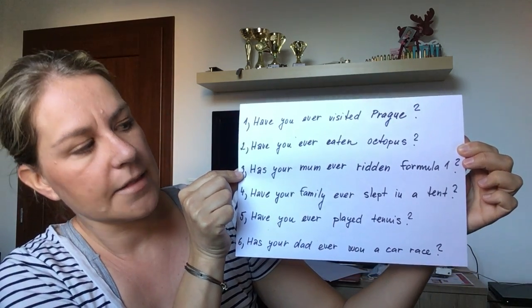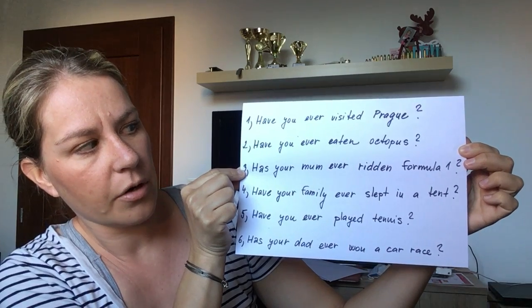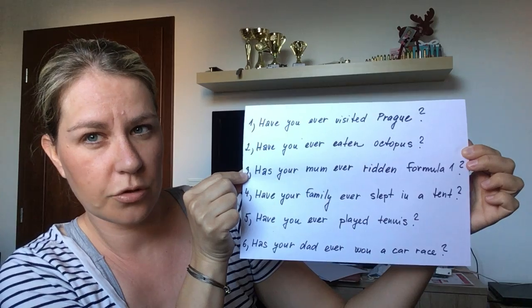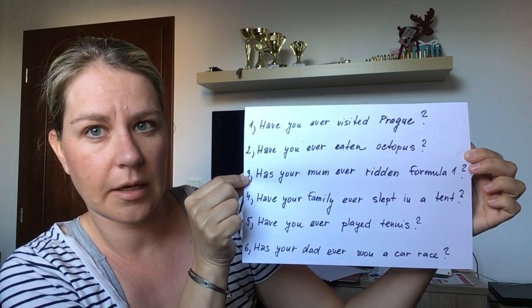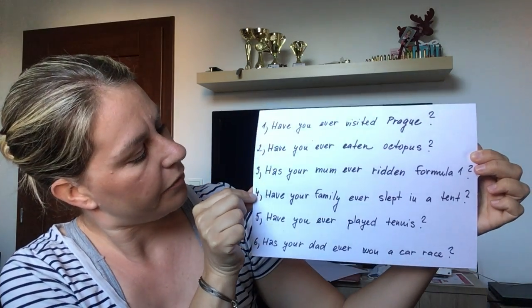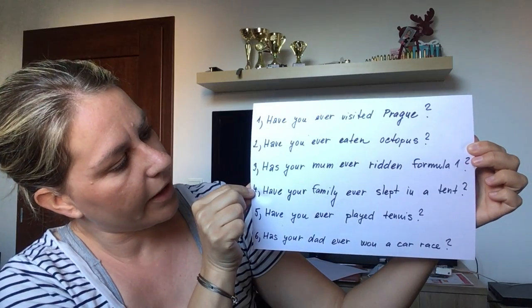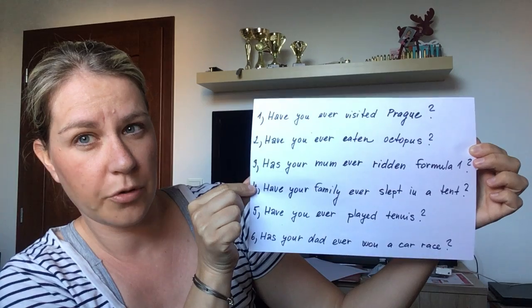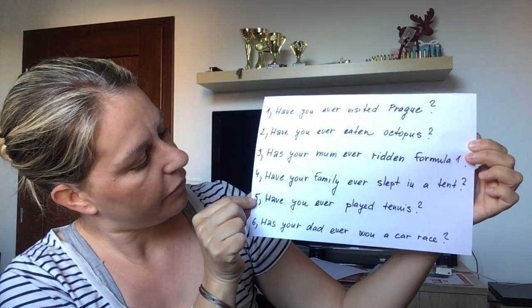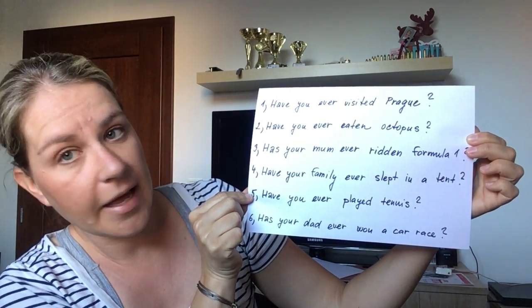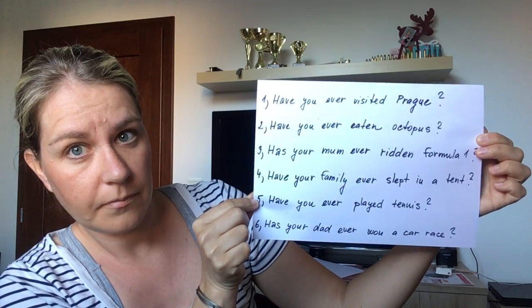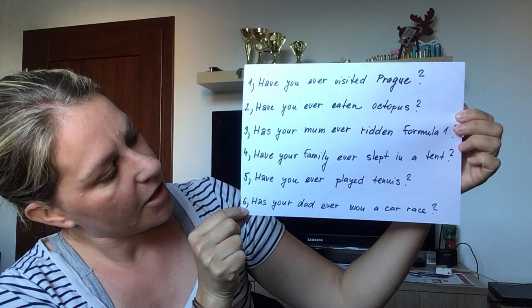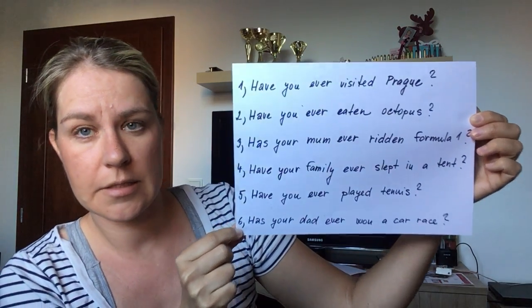Number three: Has your mom ever ridden Formula 1? Pozor — kdo je tady podmět, na koho se ptáme? Ona, ta maminka. Number four: Have your family ever slept in a tent? Zase pozor, kdo je podmět. Number five: Have you ever played tennis? And the last one: Has your dad ever won a car race?